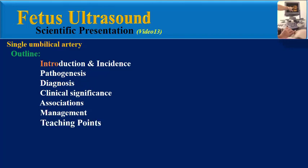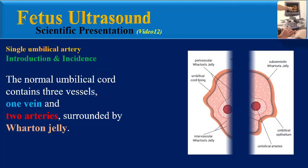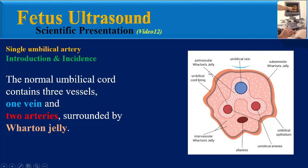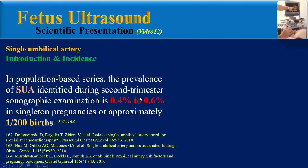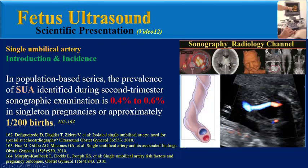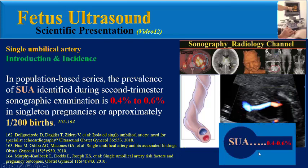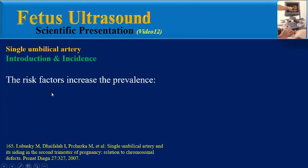The first topic is introduction and incidence. The normal umbilical cord contains three vessels: one vein and two umbilical arteries, surrounded by Wharton's jelly. The finding of a single umbilical artery is common, occurring in approximately one percent of all live singleton fetuses in population-based series. The prevalence identified during second trimester sonographic examination is about 0.4 to 0.6 percent in singleton pregnancies, or approximately one per 200 fetuses.